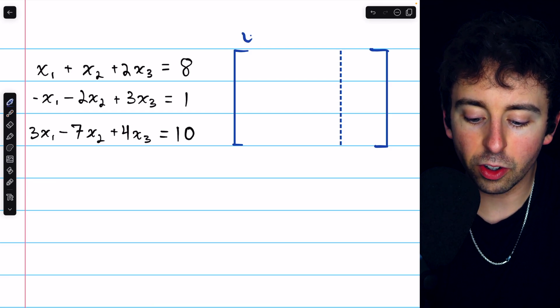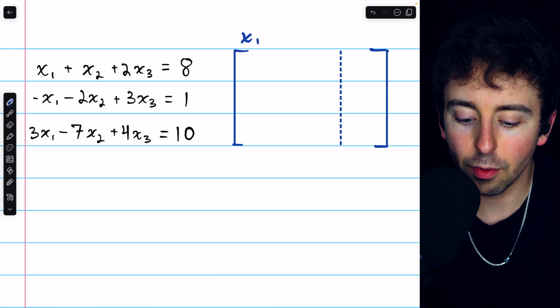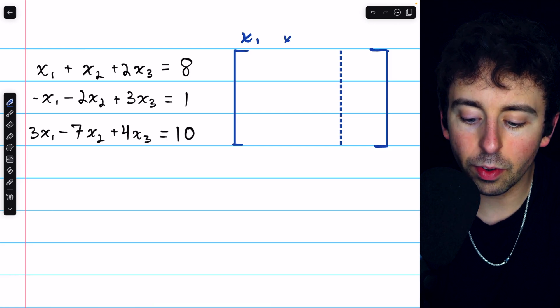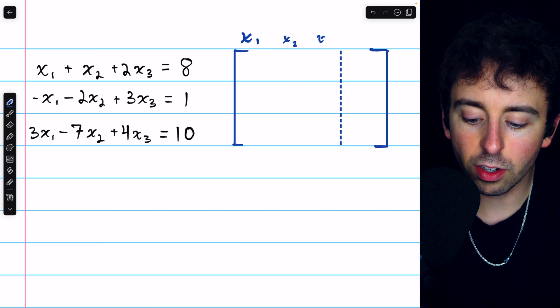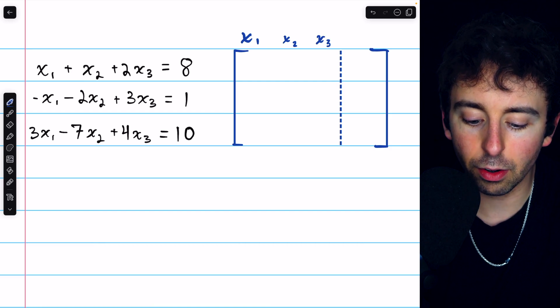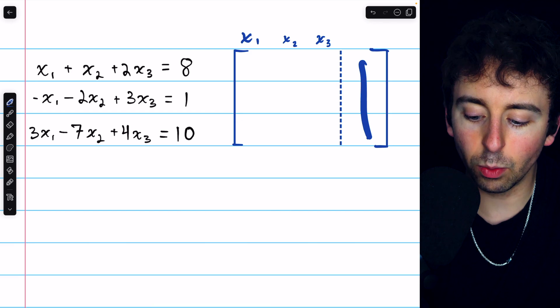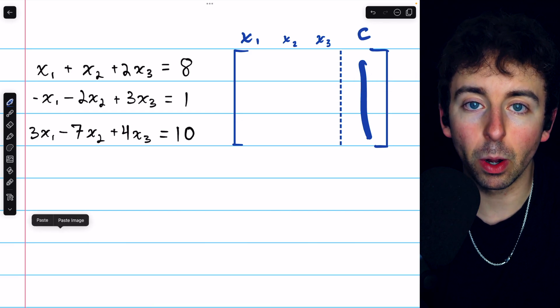How it works is we'll put the coefficients of the first variable in the first column, the coefficients of the second variable in the second column, the coefficients of the third variable in the third column, and then the constants will go in the rightmost column.